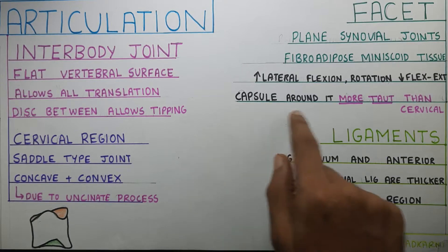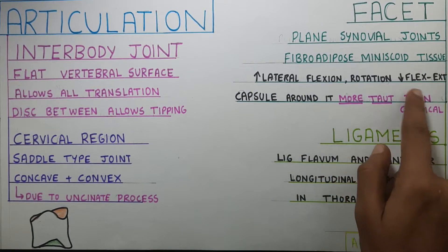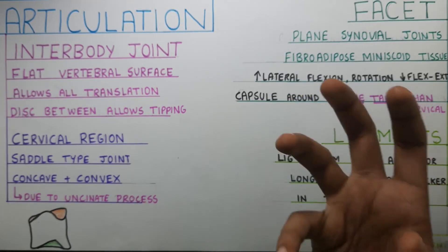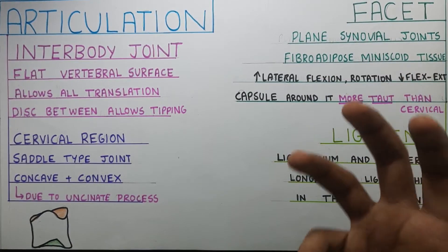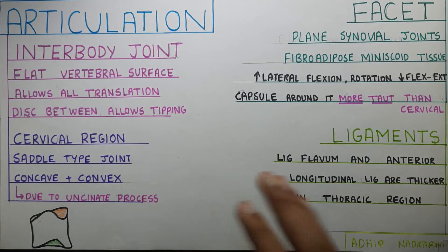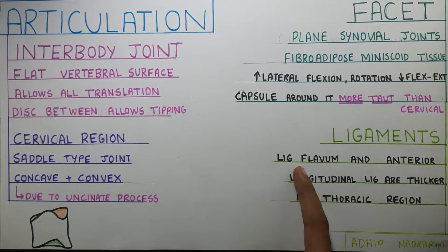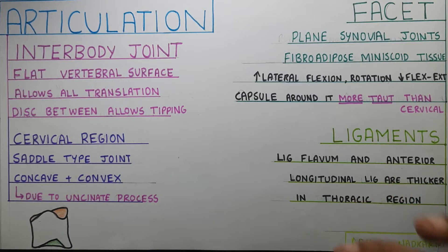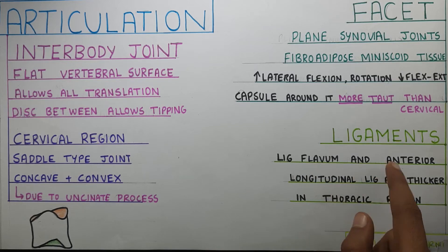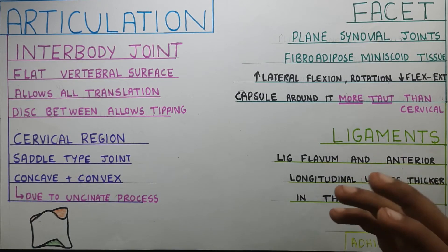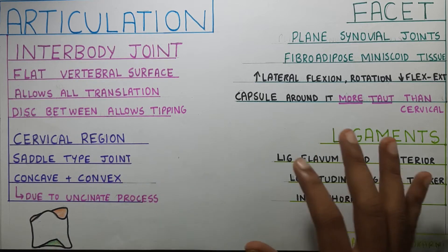Apart from this, the capsule at the thoracic facet joint is more taut than in the cervical region. In the cervical region the capsule around the facets was pretty loose, which gave it a larger range of motion — which is not the case in the thoracic region. One last point about the ligaments: the ligamentum flavum and the anterior longitudinal ligament are way thicker in the thoracic region, which again restricts the range of motion. The anterior longitudinal ligament hampers flexion-extension movement, and so does the ligamentum flavum.